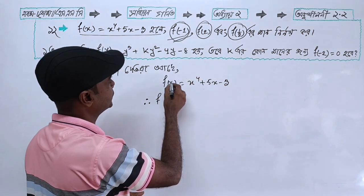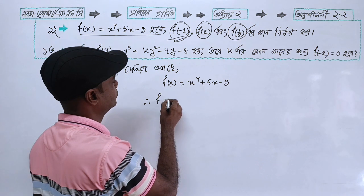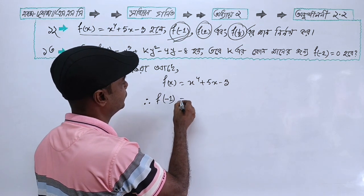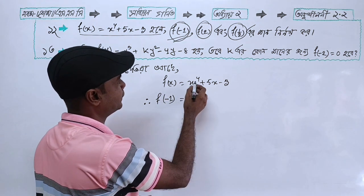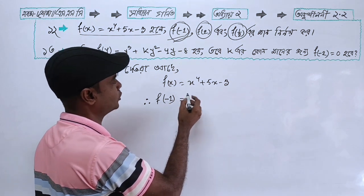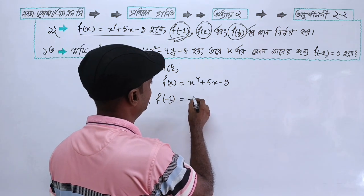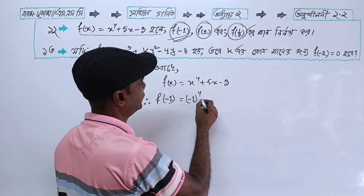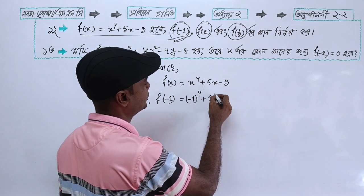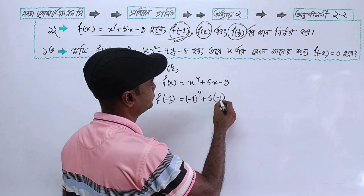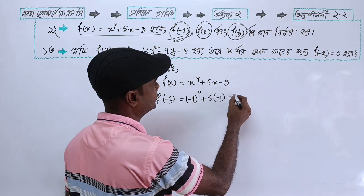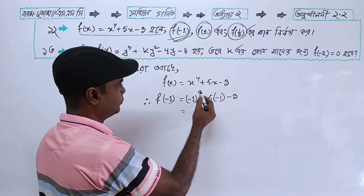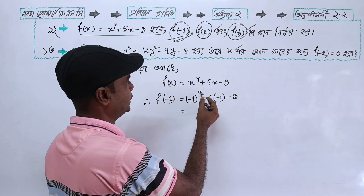So x is equal to minus 1. Substituting, minus 1 to the power 4 plus 5 into x equals minus 1, minus 3. x to the power 4 is equal to 1.